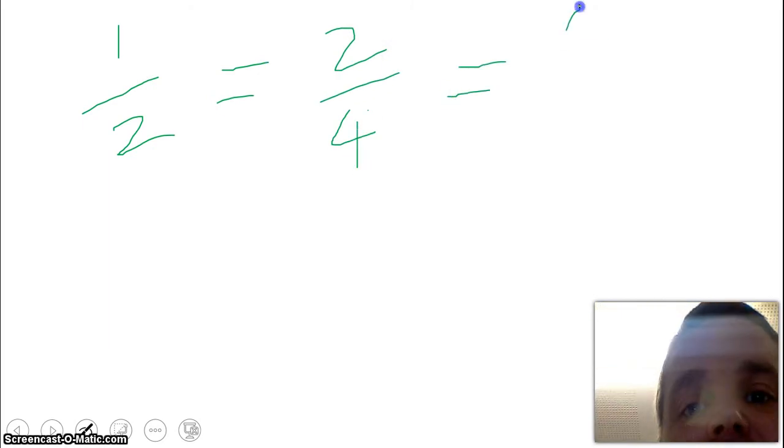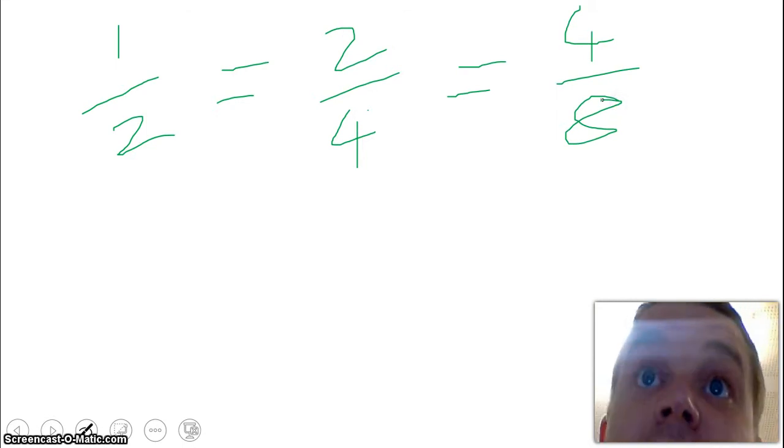We talked about equivalent fractions, so that was where 1 half is the same as 2 quarters, which is the same as 4 eighths. So we talked about equivalent fractions.